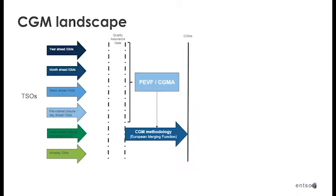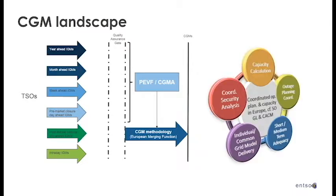We have a pan-European verification function and common grid model alignment, which takes the net positions and schedules from each region and produces a pan-European scheduling that can be used to build a common grid model for the whole of Europe. If the quality of the IGMs is bad, it would be rejected and a message sent back to the TSO. The TSO has a chance to improve the IGM, or if the time limit has passed, substitution methods will be used inside the merge function to take the best guess.